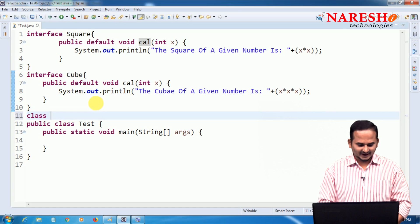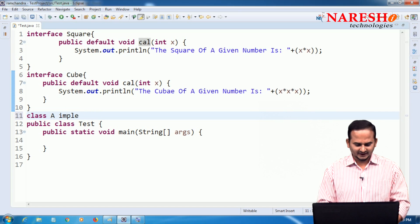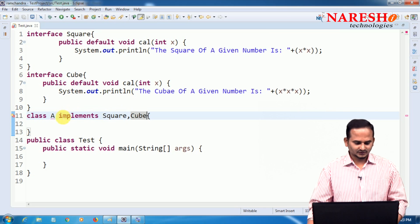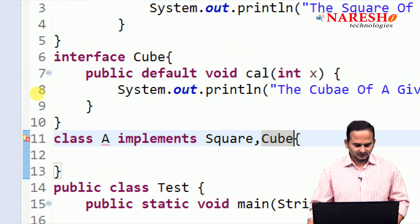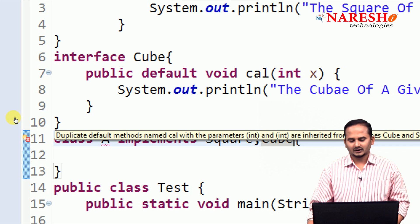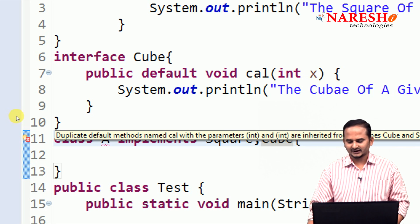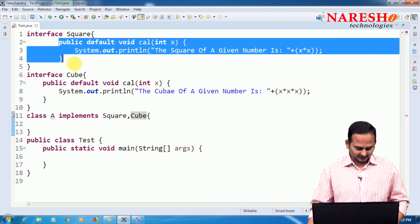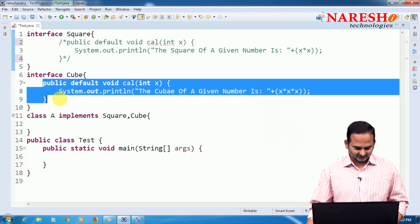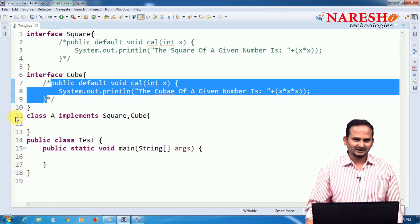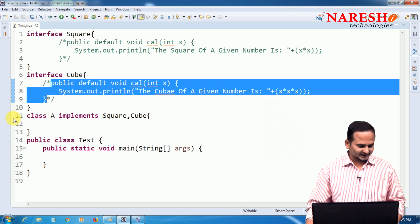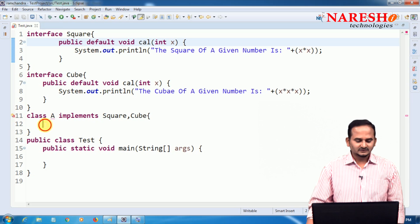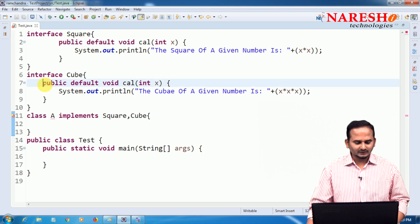If any class like A which implements Square, Cube, then definitely we will get error. Error will display under the A. Now what is that error? Default methods named cal with parameter of int are generated from the types Cube and Square. So same method but different logics. If you comment these two methods, there is no error in the 11th line. Now I am going to uncomment and save it. Now it will give an error. That means some ambiguity problem. How can we overcome this ambiguity problem?